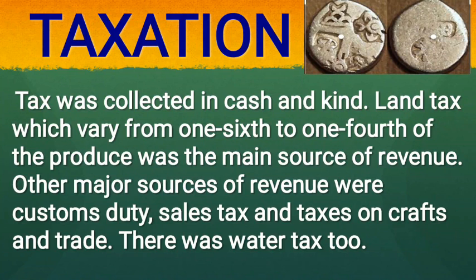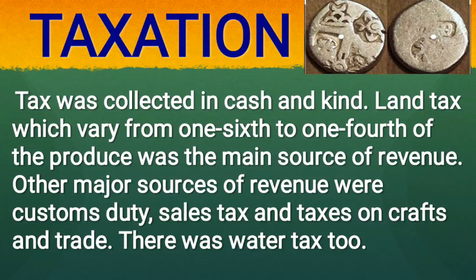Taxation: The cost of running the elaborate administration was met through a system of taxation. Tax was collected in cash and kind. Land tax, which varied from one-sixth to one-fourth of the produce, was the main source of revenue. Other major sources of revenue were customs duty, sales tax, and taxes on crafts and trade. There was also a water tax.